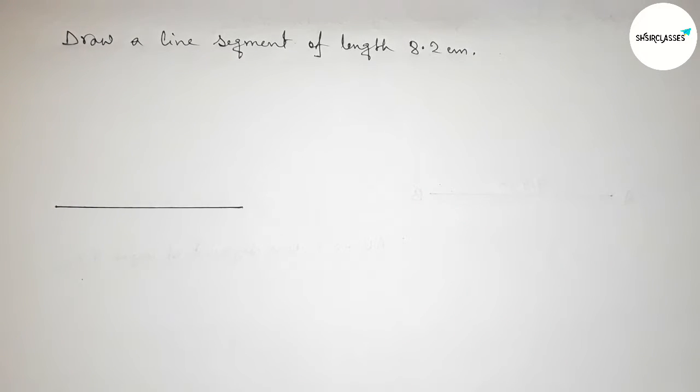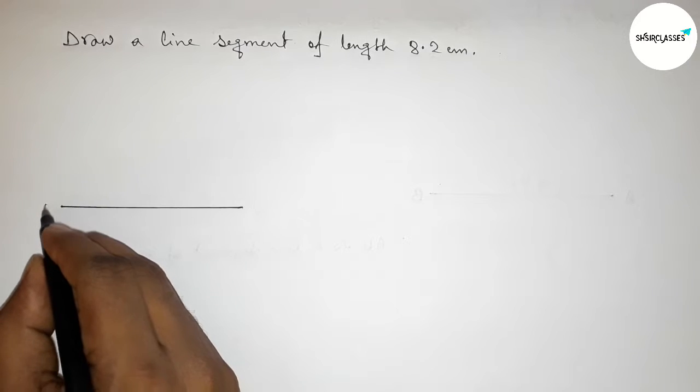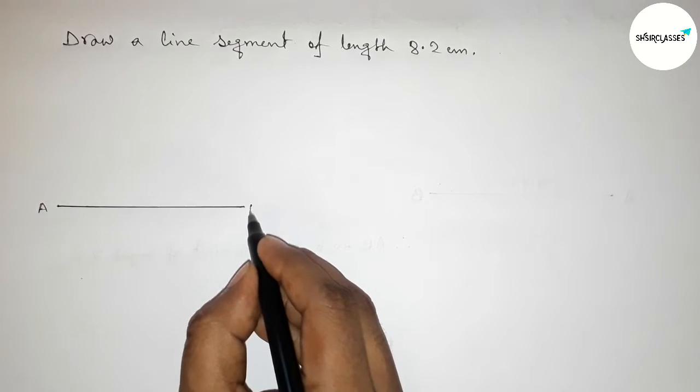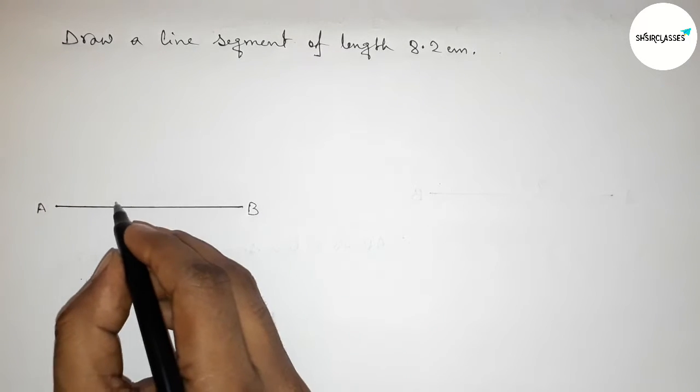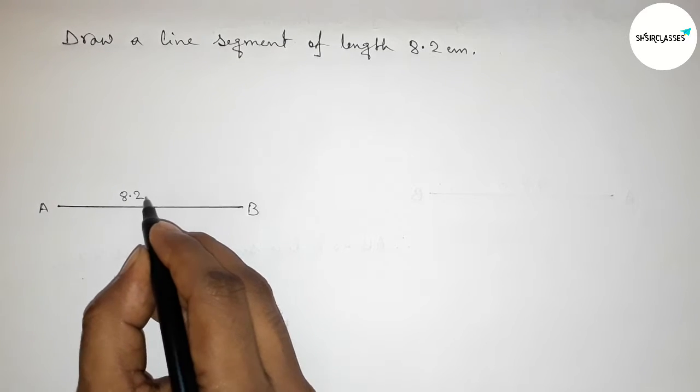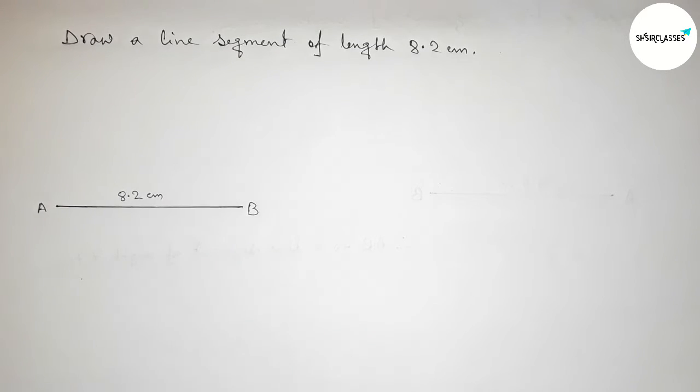Okay, so now taking here point A here and here B. So AB equals to 8.2 centimeter line segment.